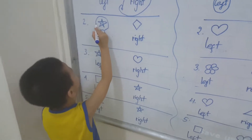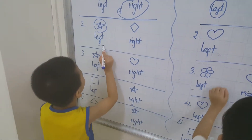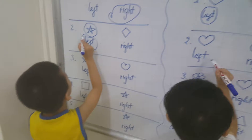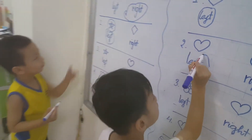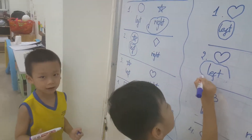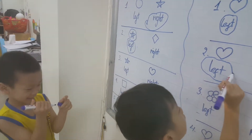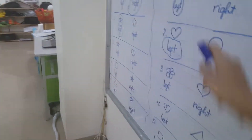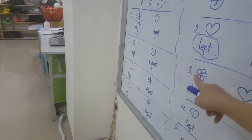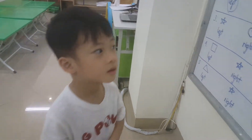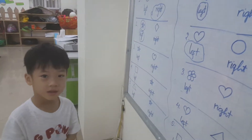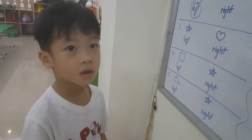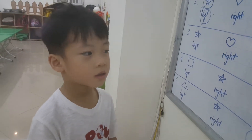Let's find number two. Where is the heart now? Find me number two — where is the star? Oh, you circled both! Where is the star? It's on the... okay, remember left and right. It's on the left. Thank you. Where is the heart?